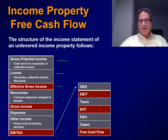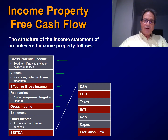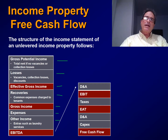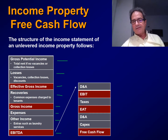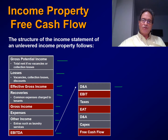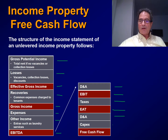Then we obtain effective gross income. We add the recoveries, which are common expenses charged to the tenants. Then we have gross income. We subtract expenses. We add other income, which represents possible services given to tenants as additional income for the owners. After all this, we obtain EBITDA — earnings before interest, taxes, depreciation, and amortization. We subtract depreciation to obtain EBIT. We subtract taxes to obtain earnings after taxes. Then we add back depreciation and subtract CAPEX to obtain the free cash flow, as in any other valuation.